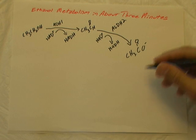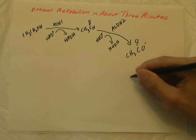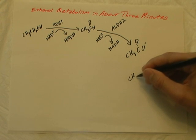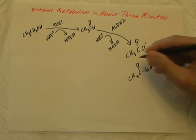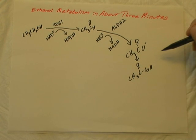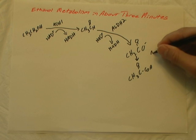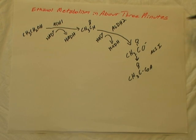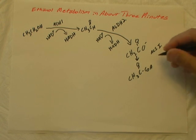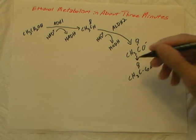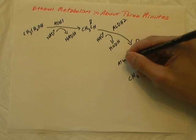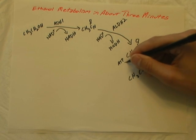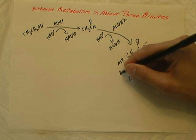Acetate can be converted either in the liver or in muscle and heart tissue to acetyl-CoA. This reaction in the liver is catalyzed by acetyl-CoA synthetase 1, and in muscle tissue by acetyl-CoA synthetase 2. This is an energy-consuming reaction that results in conversion of one molecule of ATP to AMP.